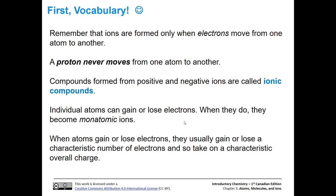If we moved a proton, that would change the element, so we can't do that. Any compound that's formed from positive and negative ions is going to be called an ionic compound. Individual atoms can gain or lose electrons, and when they do that, they're called monatomic ions.